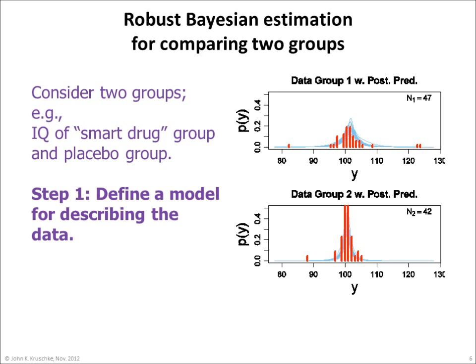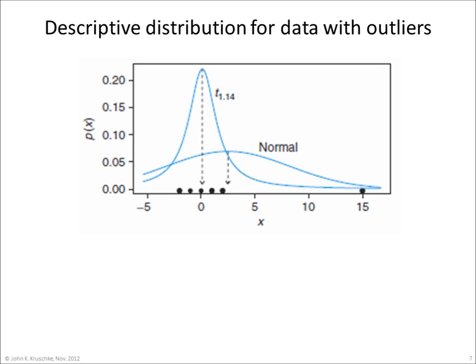The first step in Bayesian estimation is to define a model for describing the data. This figure shows six data points illustrated by black dots. Notice that five of the data points are clustered together, while one data point falls to the far right. The best-fitting normal distribution is pulled by that outlying point so that the normal does not describe the data well. By contrast, the best-fitting t-distribution is nicely peaked over the main cluster of data points with a long tail that accommodates the outlier.